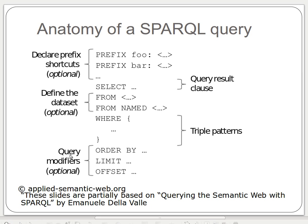There are also optional modifiers where we can, for example, order the data by a certain field or limit the number of results — we saw that when querying the DBpedia triple store. So to summarize: prefixes are optional, then the SELECT statement, then the optional FROM keyword to specify the dataset, then the main WHERE clause with curly brackets for conditions, and finally optional modifiers.